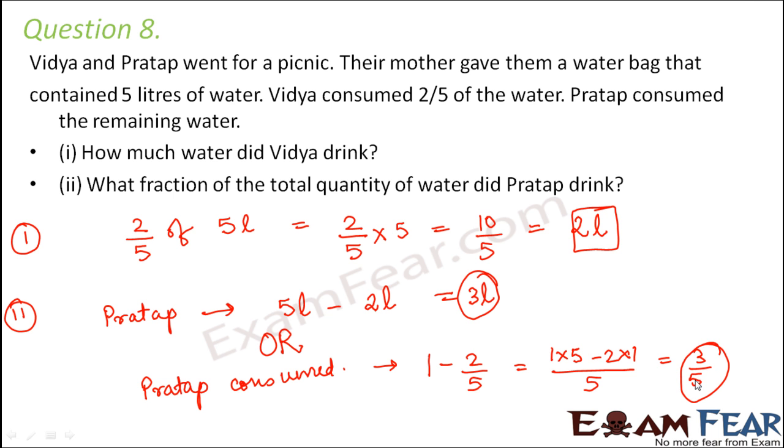So Pratap consumed 3/5 of the total water. And if you follow by this procedure in that case you get that Pratap drank 3 liters of water. So when you want to find out the fraction you would say that Pratap drank 3 liters out of 5 liters of water. So in this case also you get the same result that Pratap drank 3/5 of the remaining water.